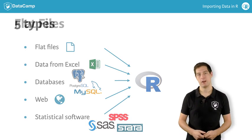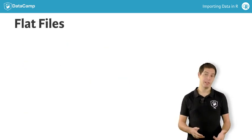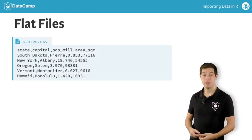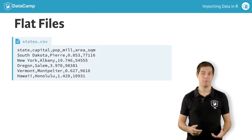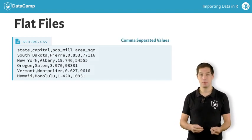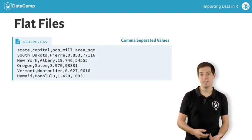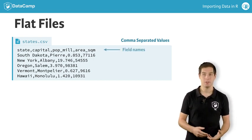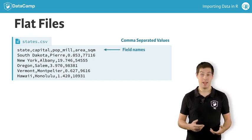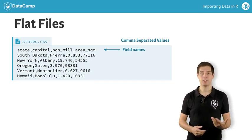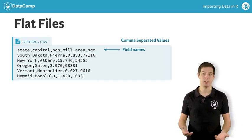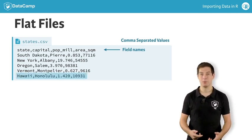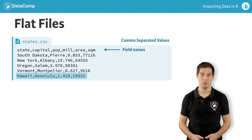Let's start off with flat files. Flat files are typically simple text files that display data as tables. Have a look at this example: states.csv, a flat file where CSV stands for comma-separated values. The data lists basic information on some US states. The first line gives the names of the different columns or fields. After that, each line is a record, and the fields are separated by a comma, hence the extension CSV. For example, there's a state, Hawaii, with the capital Honolulu and a total population of 1.42 million.